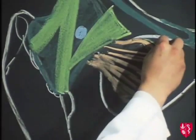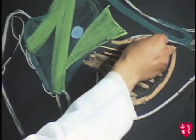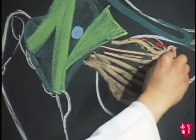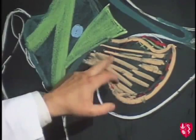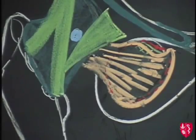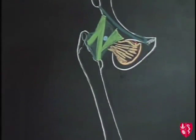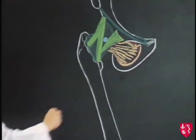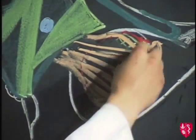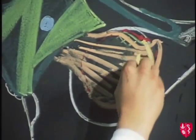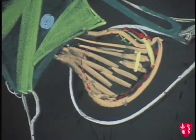Now we'll put in the obturator artery, a branch of the internal iliac artery, which comes through the obturator canal and divides into one branch going one way and another going the other, lying underneath the obturator externus and sending a branch up to the head of the femur along the ligamentum teres. Then we bring through the obturator nerve. Just as it emerges through the obturator canal it divides into two: an anterior division passing above the upper margin of the obturator externus, and a posterior division which supplies the obturator externus and then emerges through its substance.